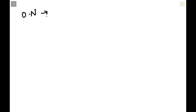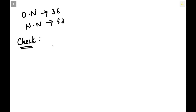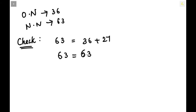Let us verify our solution against the given condition: the new number equals the original number plus 27. We have original number 36 and new number 63. Checking: 63 equals 36 plus 27, which equals 63. Hence proved — our solution is correct.